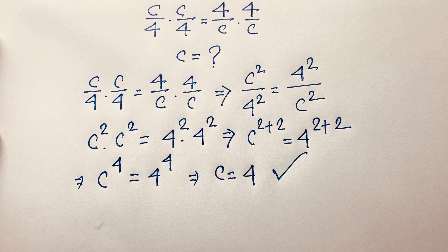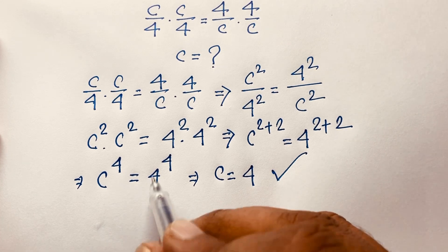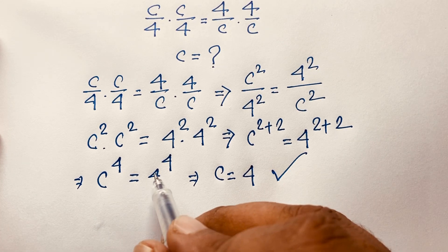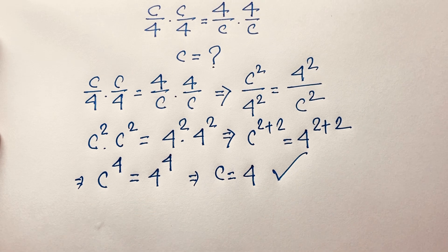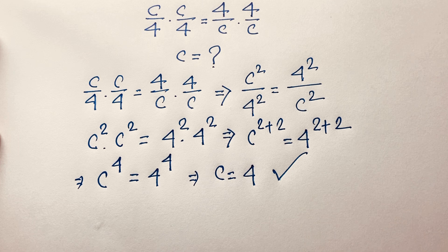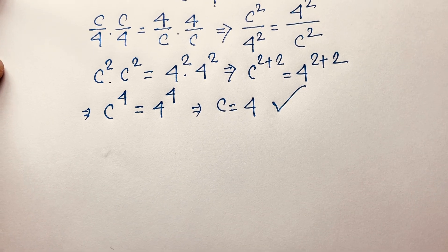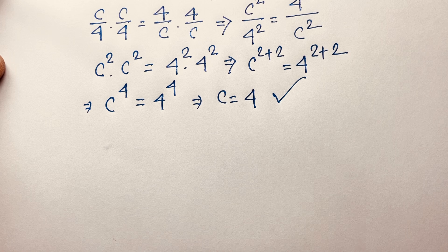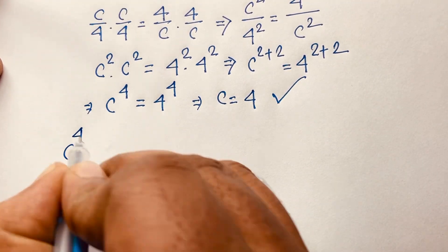But we need to find all four roots because the exponent is 4. So c to the power 4 equals 4 to the power 4 — here the exponent is 4, so we need 4 roots. We've found 1 root so far. We'll now find the other 3 roots.